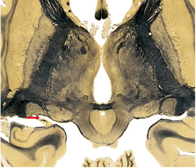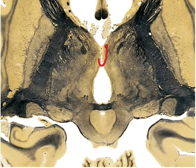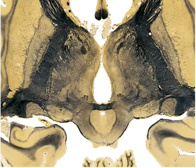We have the lateral geniculate nucleus, LGN, right here. And then we have the interthalamic adhesion, which connects both sides of each of the thalamus right here. And right here we have the internal capsules — we have another one right here.